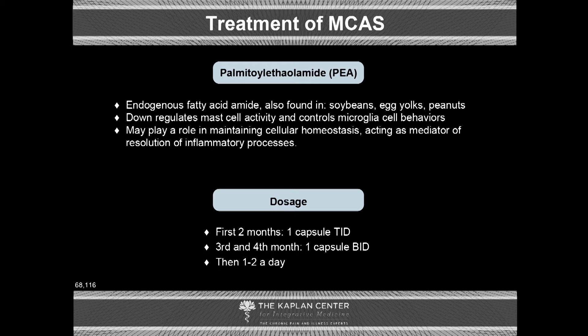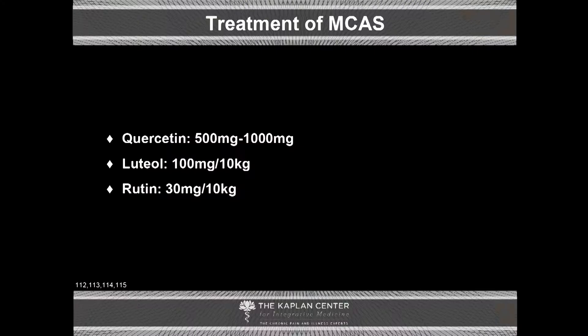PEA is particularly interesting. It's an endogenous fatty acid amide found in soybeans, egg yolks, and peanuts. It downregulates mast cell activity, controls microglial cell behavior, and creates homeostasis between the two. It may play a role in maintaining cellular homeostasis, acting as a mediator of resolution of inflammatory processes. These are the dosages we typically use when utilizing PEA.